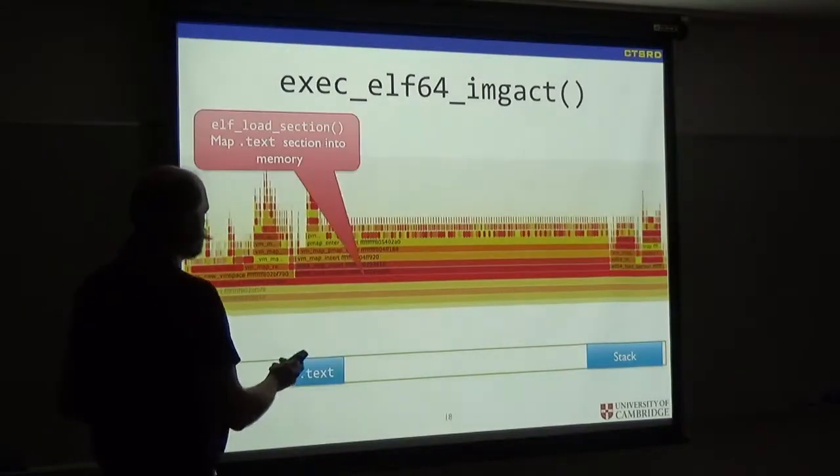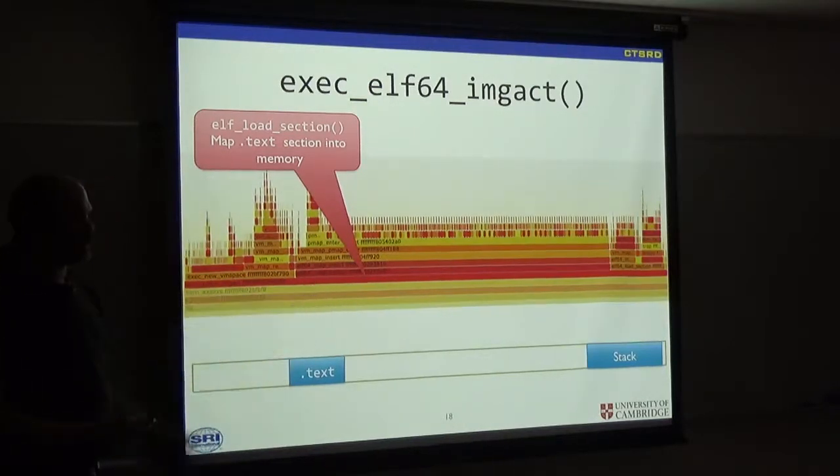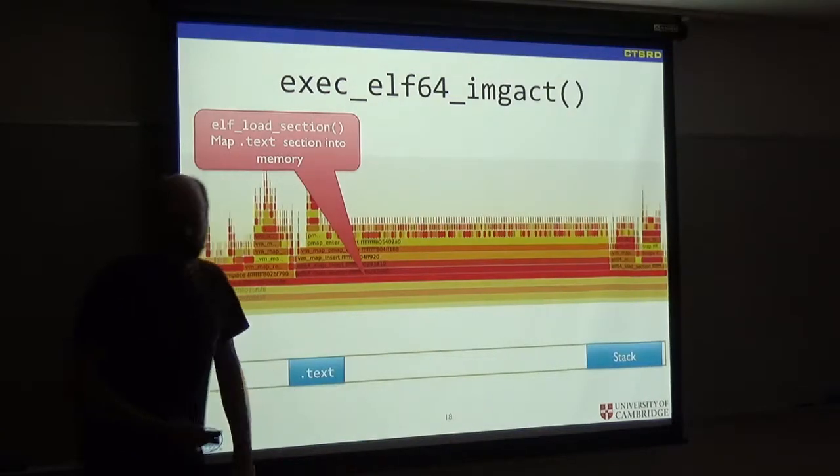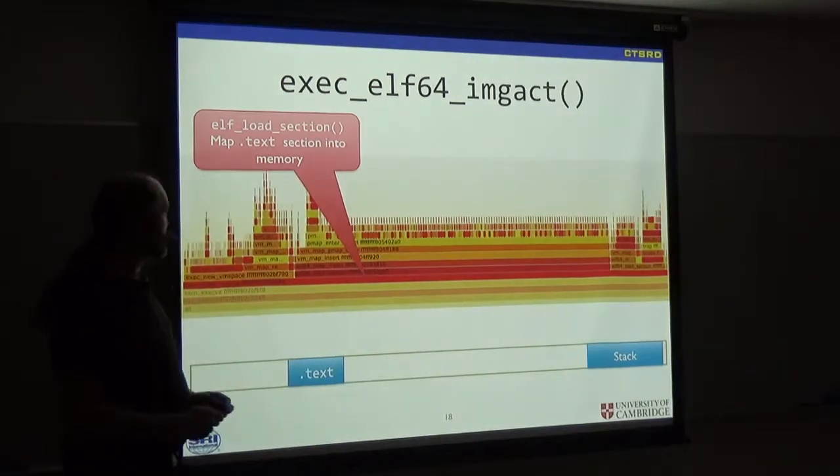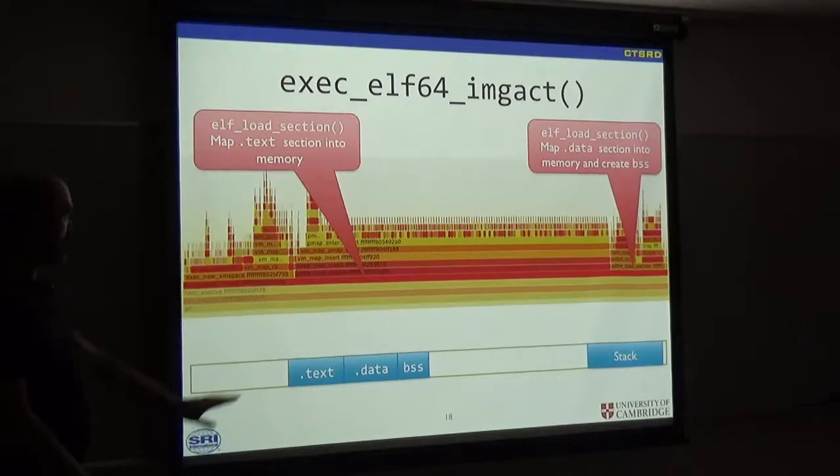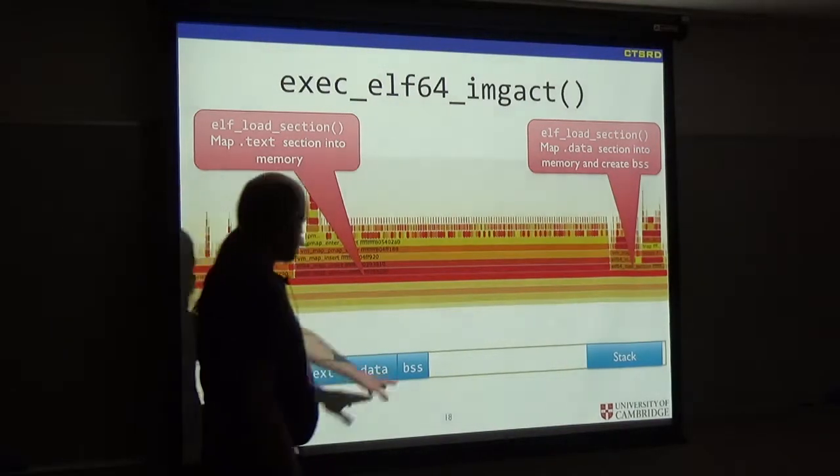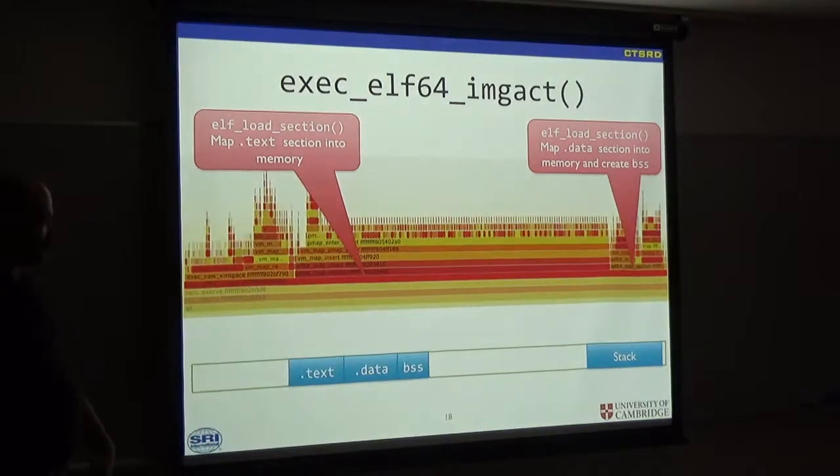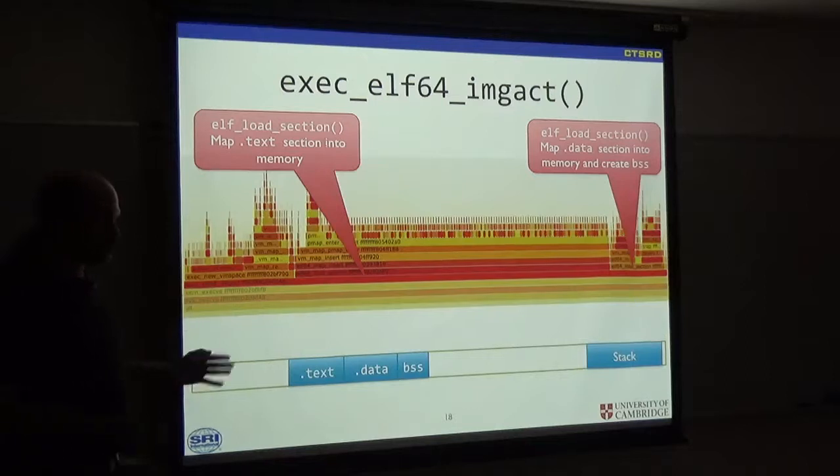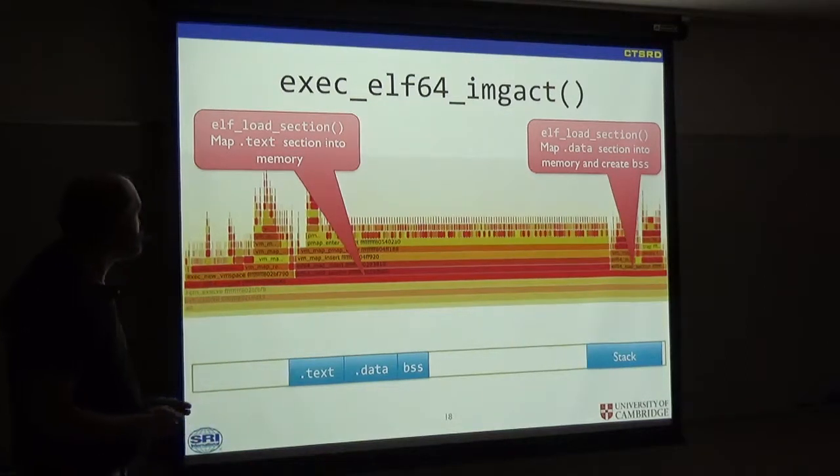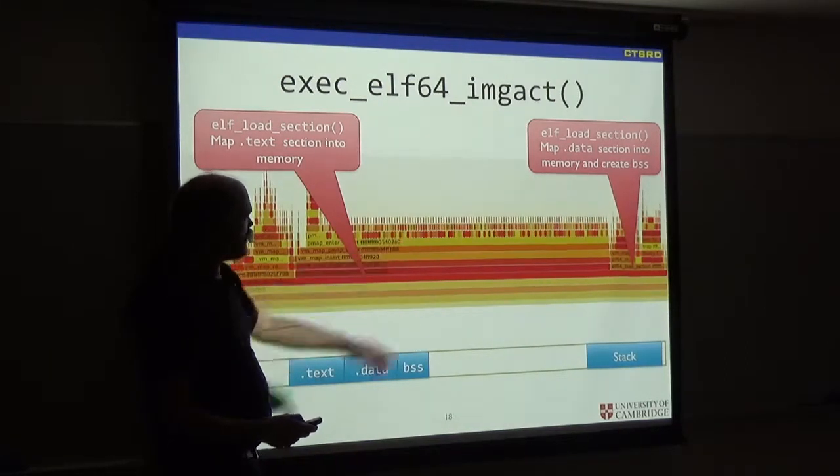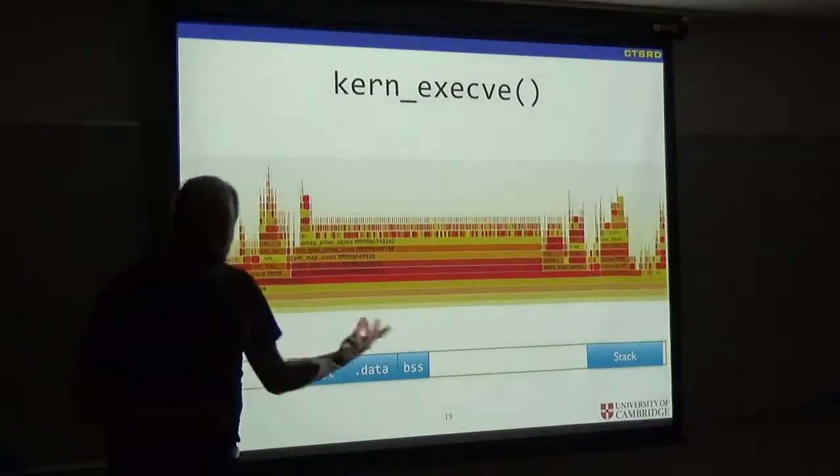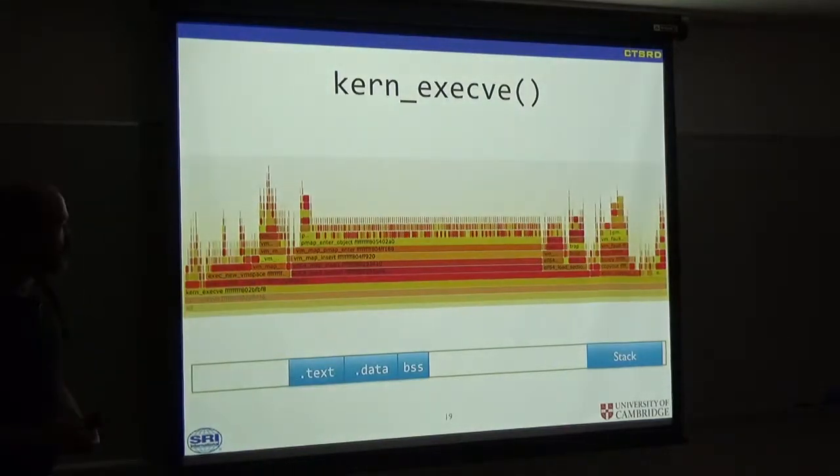Now, we're returning back out to the image act. We start to map more things in. We map the program's text segment. That's the part of the program that's just executable, as well as some read-only bits. We then map data and BSS. BSS is all the variables that were initialized to zero by default. They don't appear in the actual binary, but are mapped in as empty pages.